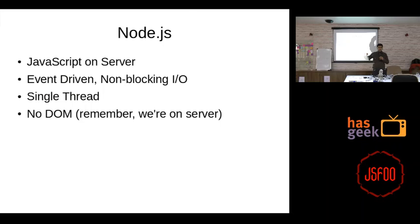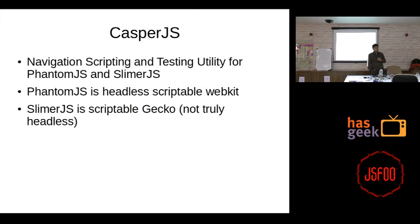So what we'll be covering today is mainly CasperJS — a scripting, navigation, and testing utility for PhantomJS and SlimerJS. In automated testing there are multiple ways: you can have full-browser tests with Selenium/WebDriver, where a Firefox or Chrome instance actually spawns and you see the application — buttons being clicked, forms submitted. CasperJS with PhantomJS is headless — it uses WebKit, a browser engine that powers Chrome, Firefox, Safari.